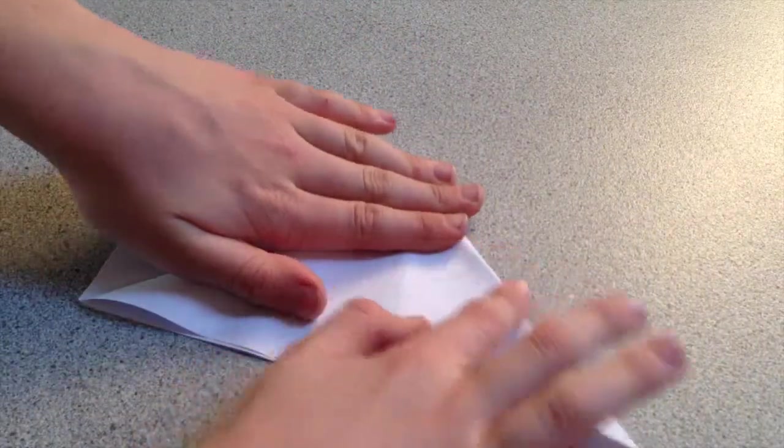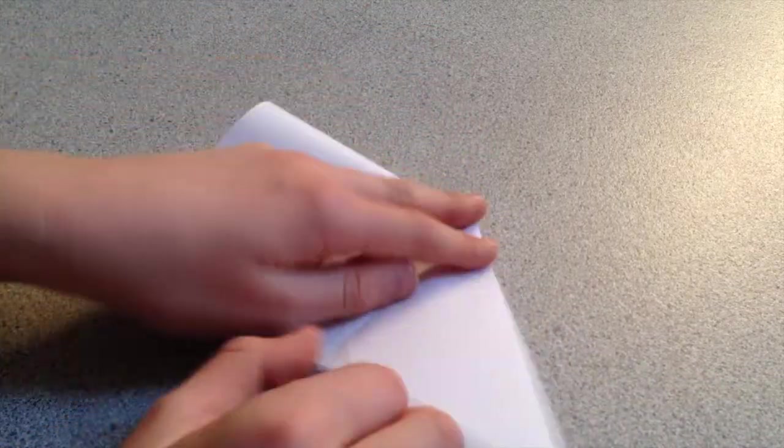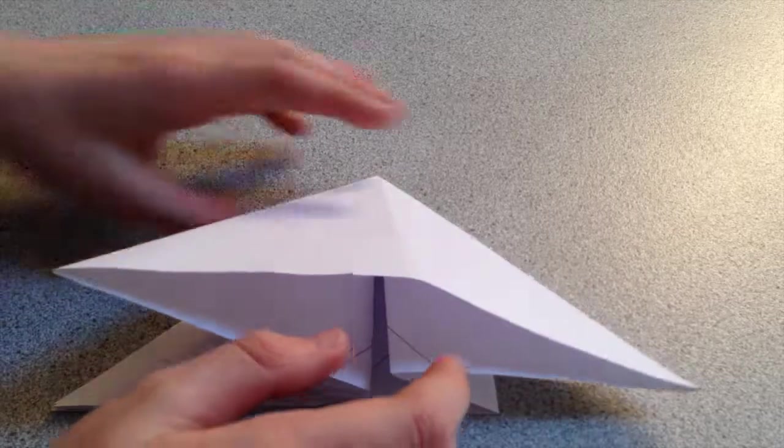Then flatten this big pocket. Flip the paper layer over. Turn over and collapse this pocket out. Then there will be this kind of double water balloon base.